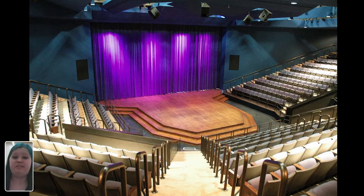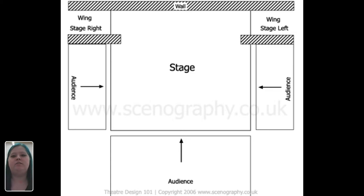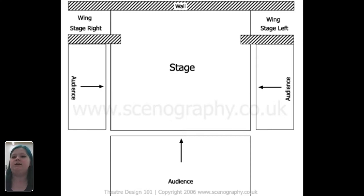The next type of stage is called a thrust stage. The stage floor is thrusted out towards the audience, and the audience is on three sides — to the left of the actors, to the right, and directly in front. A helpful memory trick: thrust and three both start with the letters THR, so a thrust stage has the audience on three sides.